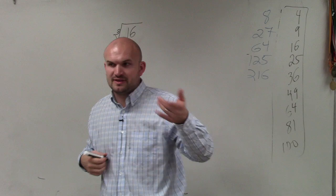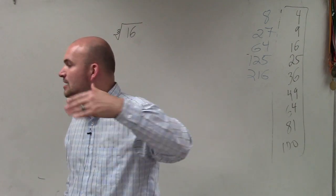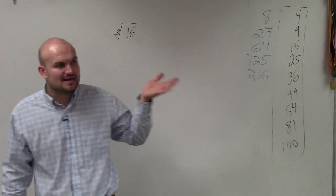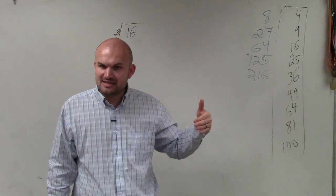But when we get into cube roots, now we're thinking of what numbers multiply by themselves. We know that 2 times 2 times 2 is 8. 3 times 3 times 3 is going to be 27.